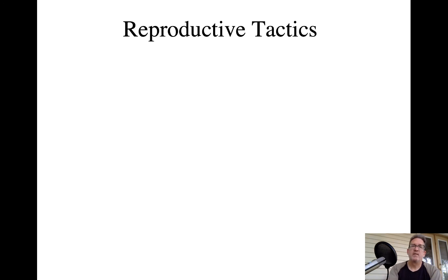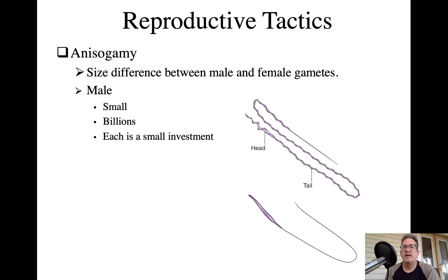Why is this? Males have really small gametes and can produce lots of them — they're generally not sperm-limited. Females produce very large gametes and are limited in the number they can produce. We call this anisogamy, meaning different-size gametes. Because sperm are cheap, males are driven toward not being very selective about mating opportunities.